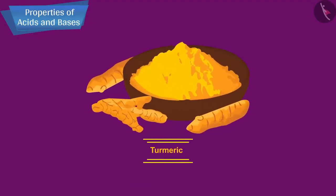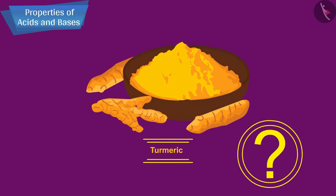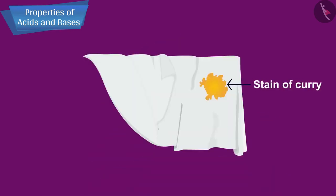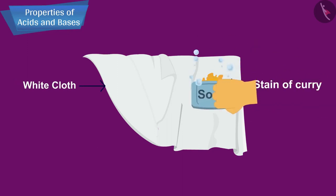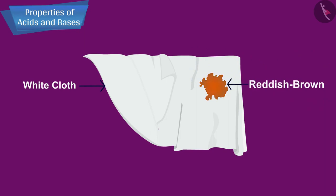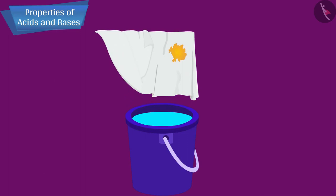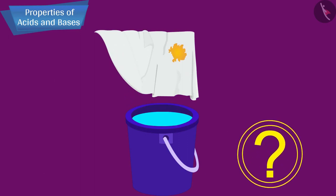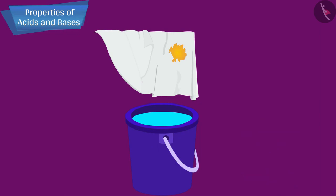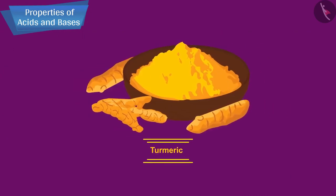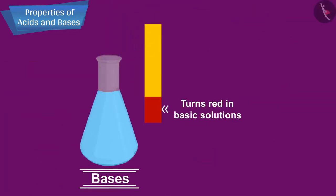Turmeric is another natural indicator. Have you noticed that a stain of curry on a white cloth turns reddish brown when soap, which is basic in nature, is scrubbed on it? It turns yellow again when the cloth is washed with plenty of water, because the basic soap gets removed with water. So, turmeric is a natural indicator — it contains a natural yellow dye and turns red in basic solutions.